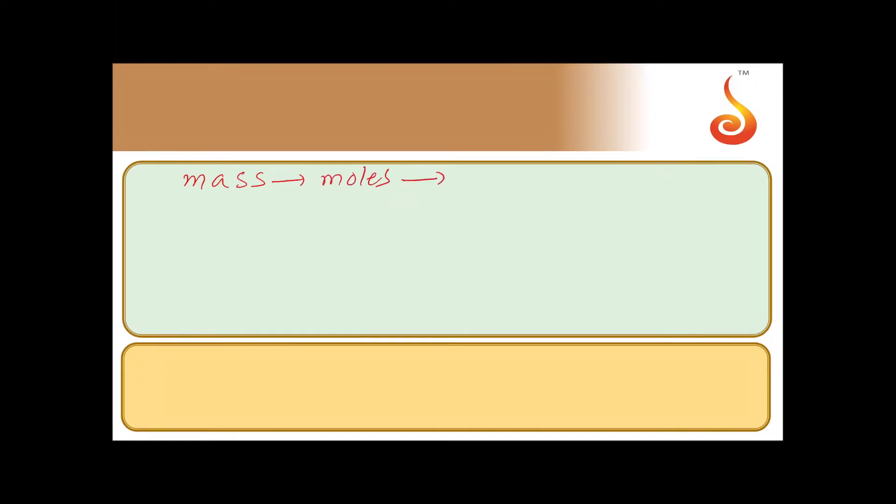First from moles we can calculate molecules, then you can find out number of electrons. So from mass to moles, mass is given as 1.6 grams. From mass to moles we can...